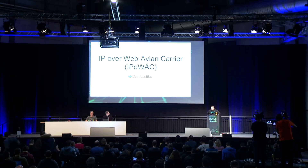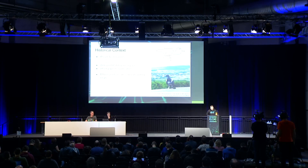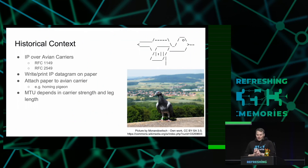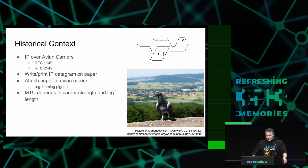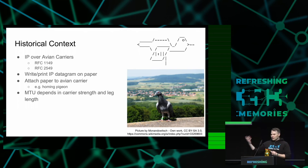Good morning. I'd like to propose a protocol: IP over web avian carrier. I use a lot of IP over avian carriers as specified in RFC 1149 and later extensions of the protocol. How that works is that I have my IP datagram, I write it on a scroll of paper, put that on the leg of a homing pigeon. I own a couple of them, then send it away, and the homing pigeon finds the destination and then you can read the IP datagram again.